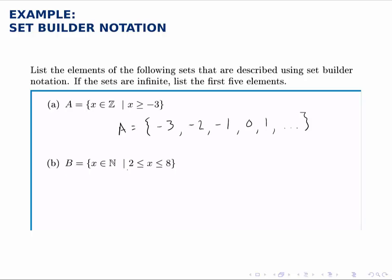The second set, we would read that statement as: B is the set of all X in the natural numbers - that's that bold N - such that 2 is less than or equal to X is less than or equal to 8.